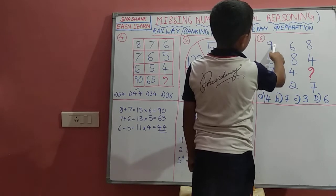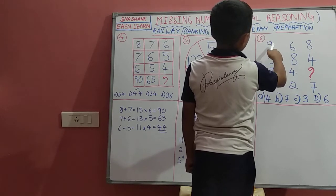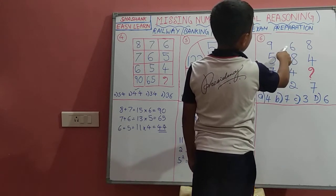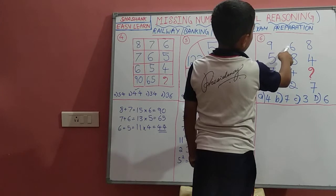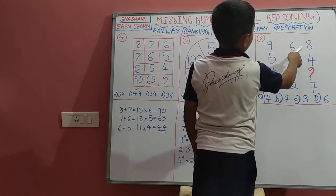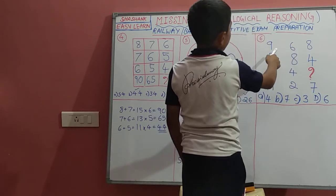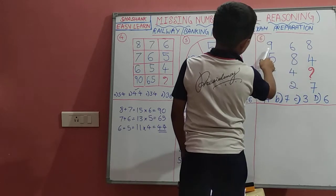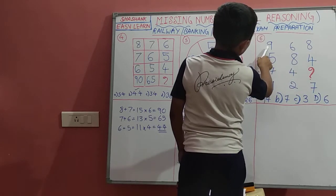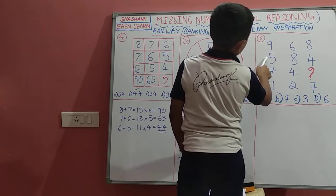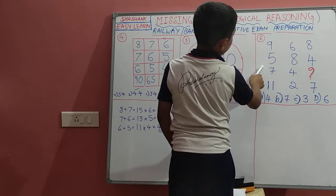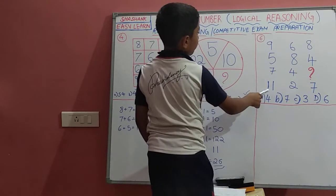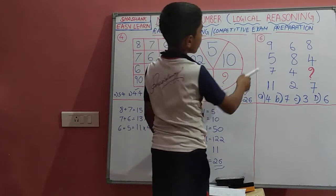We don't have any obvious relation like addition alone, because 9 plus 6 is 15 and here is 8. And there is no relation because 9 plus 5 is 14, plus 7 is 21. So there is no straightforward relationship. Let's find alternative ways.